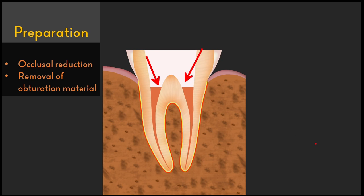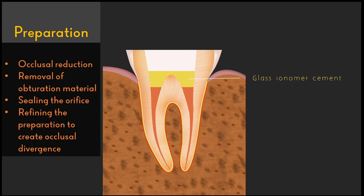After doing the occlusal reduction, the temporary coronal seal material can be removed, and around two to three millimeters of the obturation material should be removed from all the root canal orifices. After removing that material from the root canal space, the space has to be filled with a glass ionomer cement — either a conventional powder-and-liquid GIC or a resin-modified glass ionomer cement. I prefer the resin-modified glass ionomer cement for this purpose.